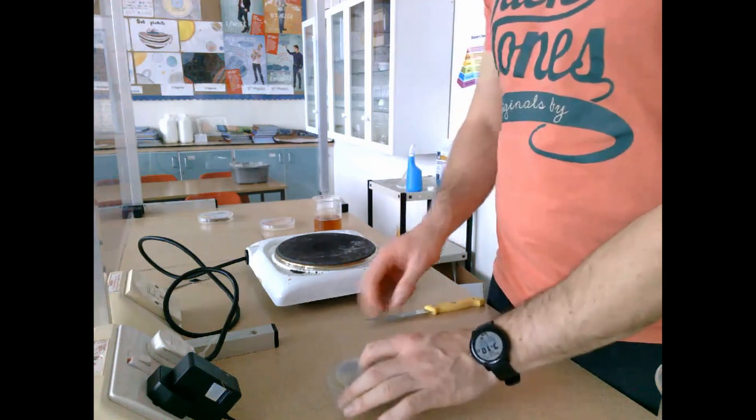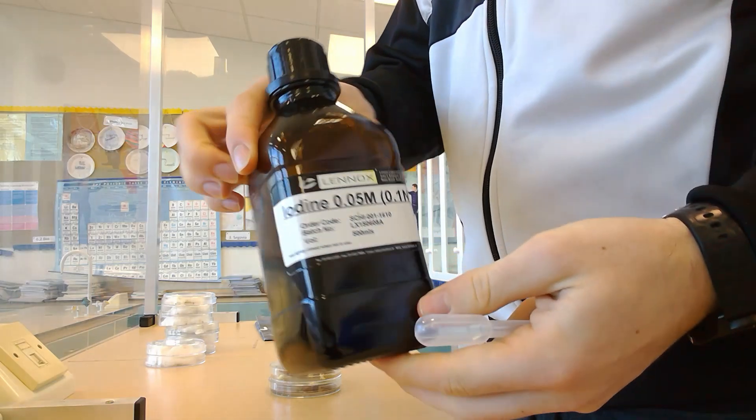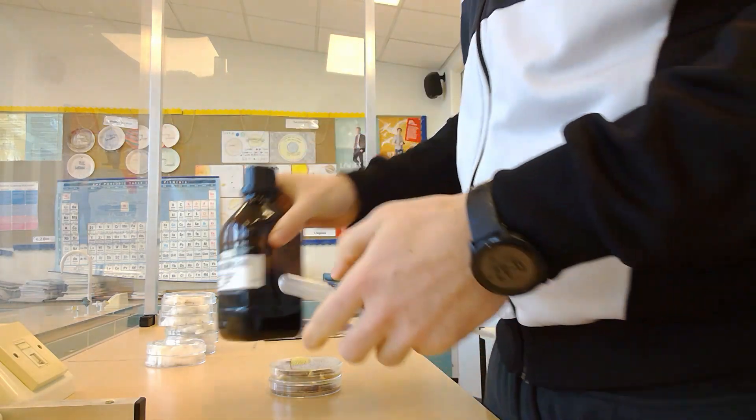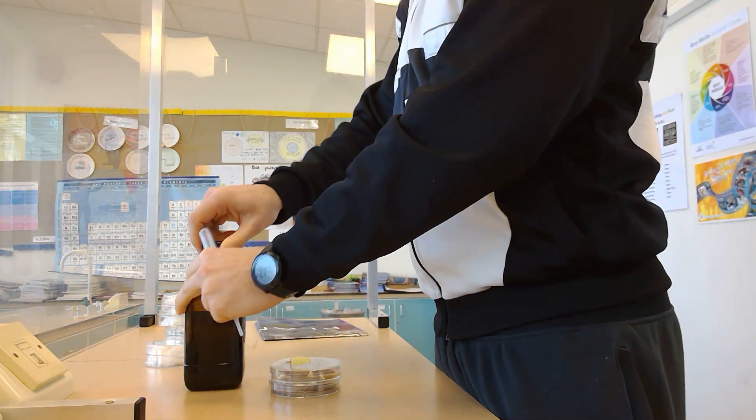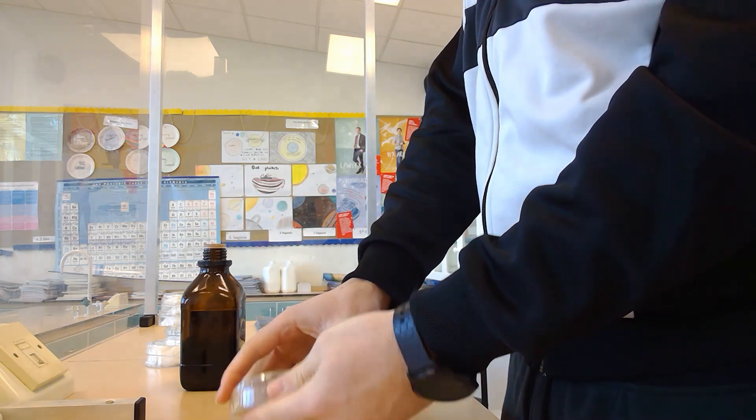These were incubated for 48 hours at 25 degrees before testing with iodine. Iodine tests for the presence of starch—if starch is present, it will turn blue-black; if not, the color remains the same.